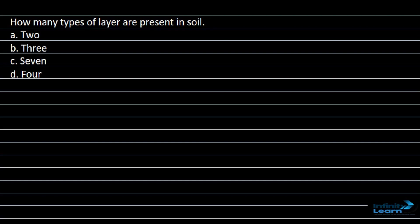Hello students, I am the teacher to the question and the question says, how many types of layer are present in the soil? We have four options given, option A: two, B: three, C: seven, and D: four.